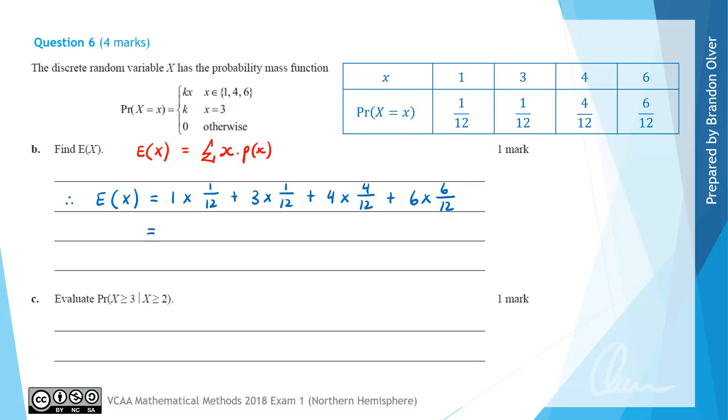And now simplifying that down, we get that that's equal to 1 over 12, plus 3 over 12, plus 16 over 12, plus 36 over 12.